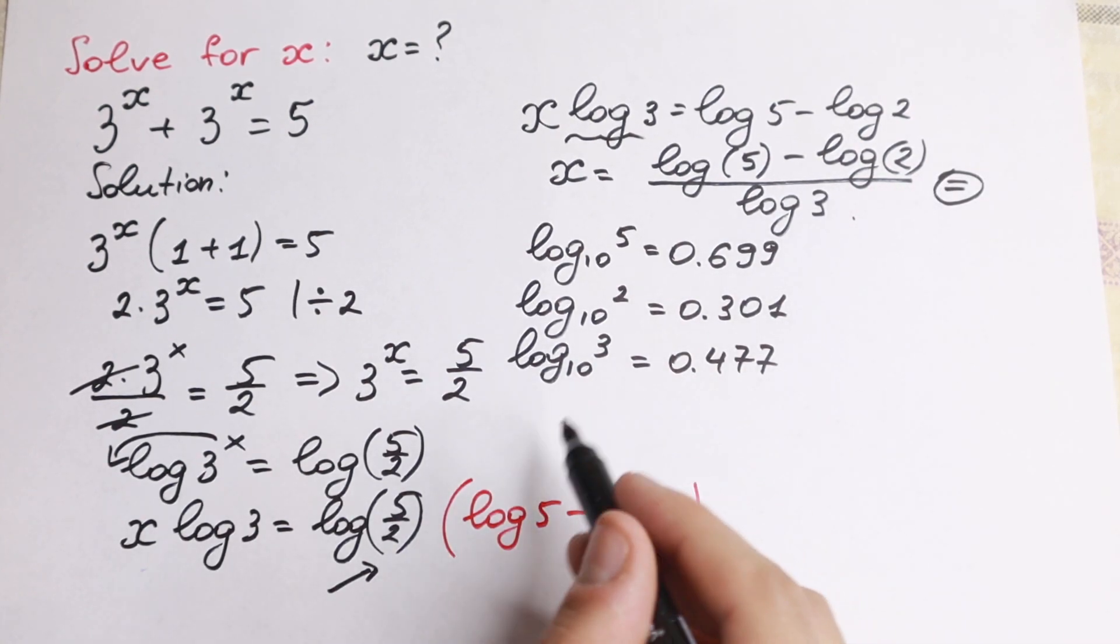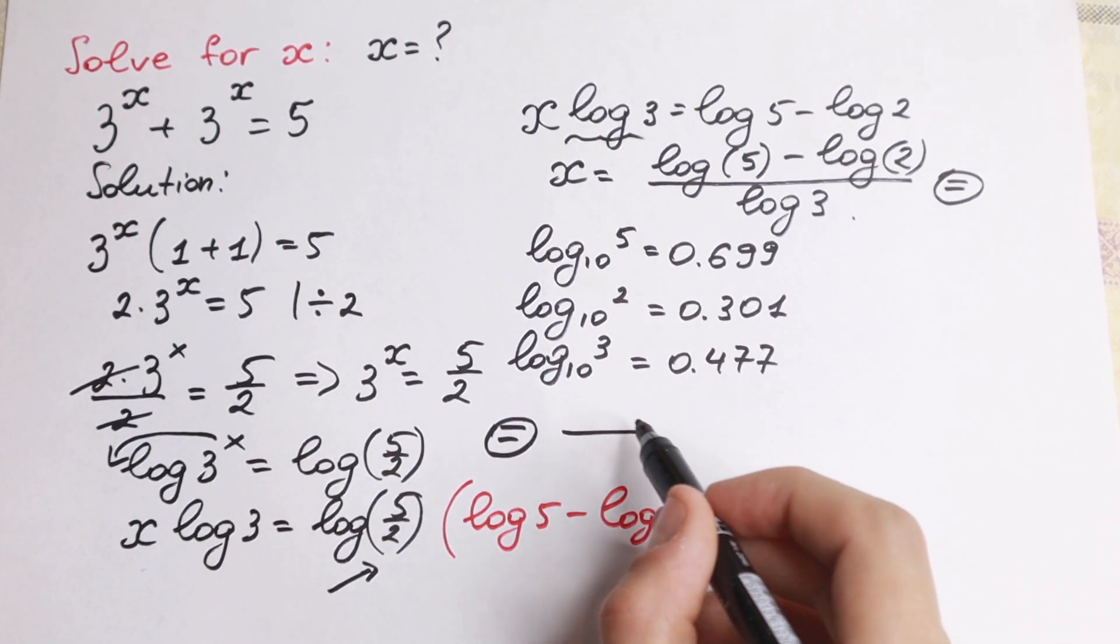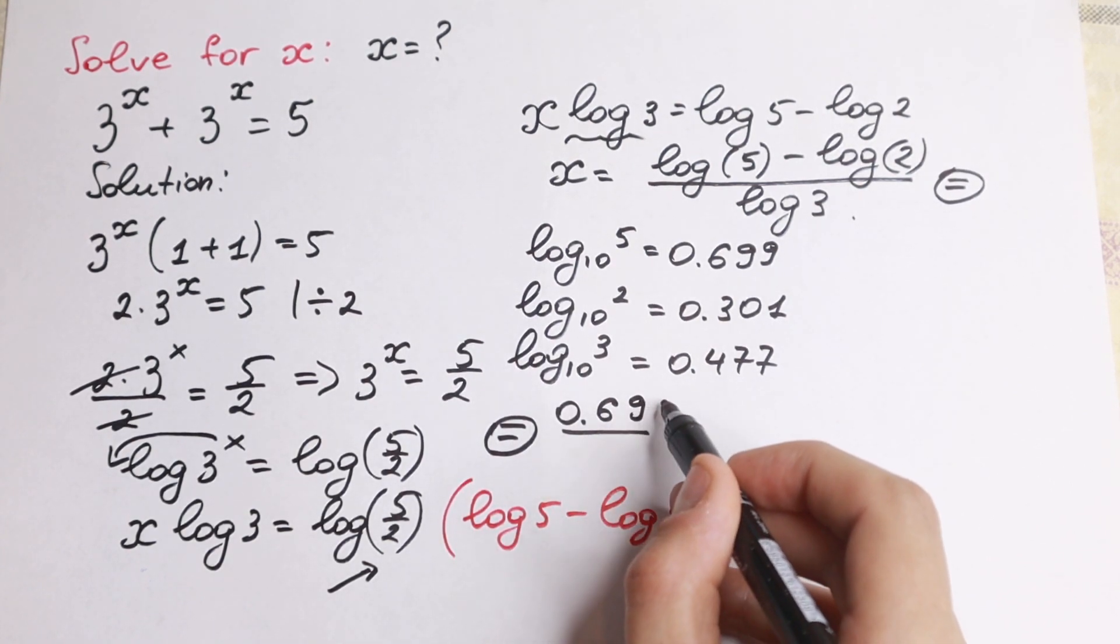So let's find approximately our solution to this. This will be equal to, in our numerator, we will have 0.698.